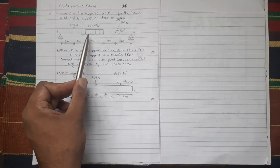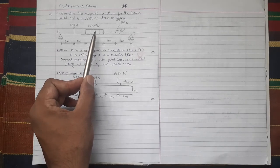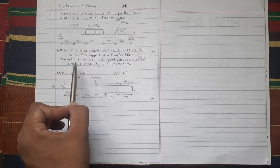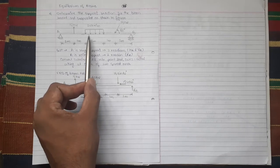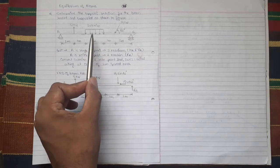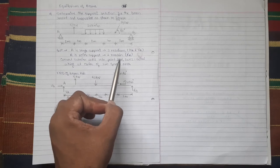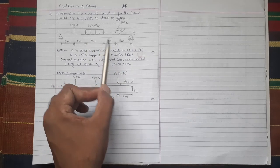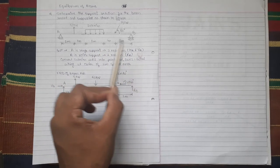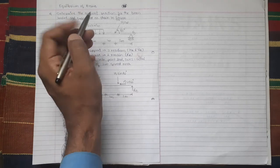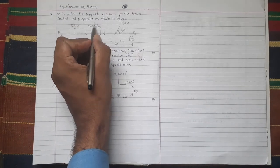Now here there is a uniformly distributed load (UDL) of 20 kN per meter acting over 2 meter span. Convert it into point load which is equal to 20 × 2 = 40 kN. It will act at the center of the spread in this format, which is shown in the free body diagram.